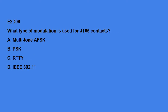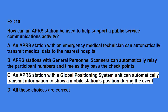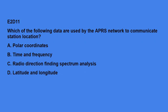E2D09: What type of modulation is used for JT65 contacts? Multi-tone AF-SK. E2D10: How can an APRS station be used to help support a public service communications activity? An APRS station with a global positioning system unit can automatically transmit information to show a mobile station's position during the event. E2D11: Which of the following data are used by the APRS network to communicate station location? Latitude and longitude.